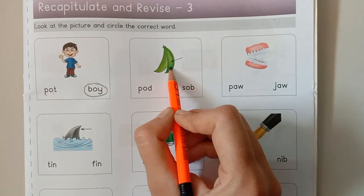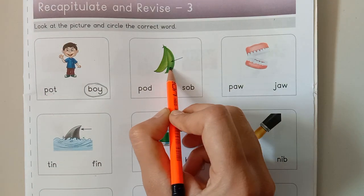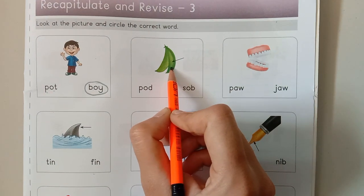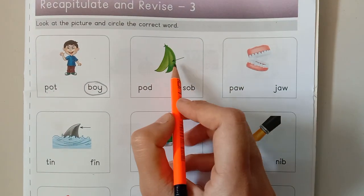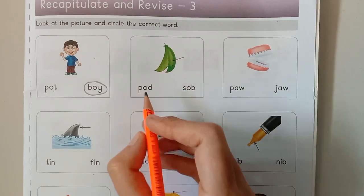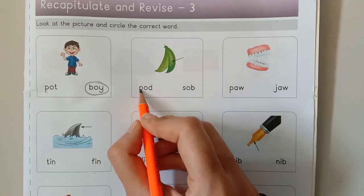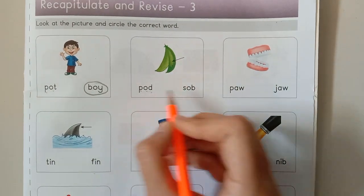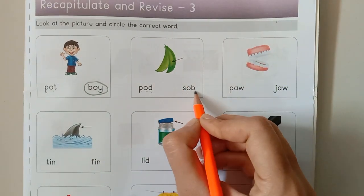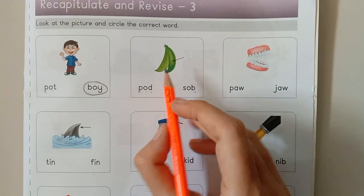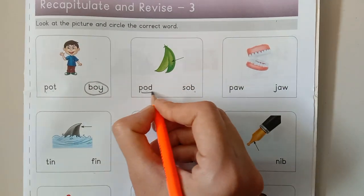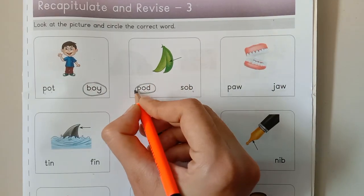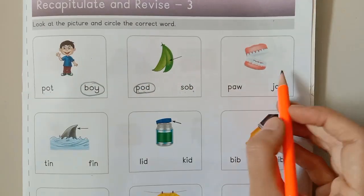Next one — which picture is this? आपको आता है न? तो आपको इधर read करना है. P-O-D, pod, and S-O-B, sob. तो इसमें कौन सा word सही आएगा? P-O-D, pod.